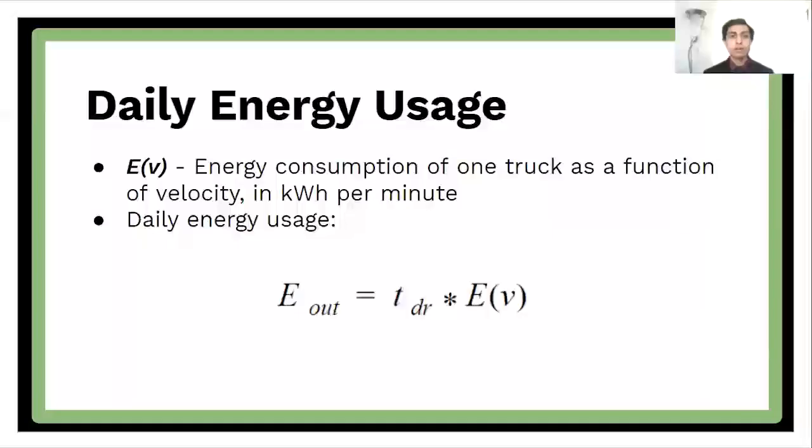Similarly, we can quantify daily energy usage based on E of V, which is the energy consumption of one truck as a function of its velocity energy in kilowatt hours per minute. And given this, the daily energy usage is simply the time spent driving multiplied by the value of E of V for the average highway speed of a truck. And these two things are, of course, equal because the intake has to be equal to the usage.